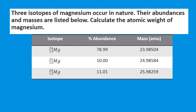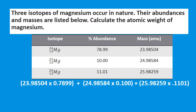We have three isotopes: magnesium-24, magnesium-25, and magnesium-26. We take mass times percentage for each isotope and find the sum of them, giving us 24.31 AMU, rounded to four significant figures, which we will discuss in more detail later.